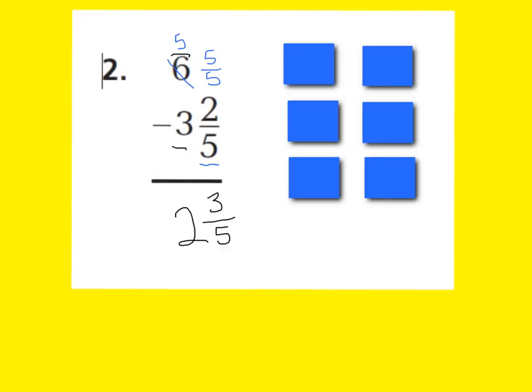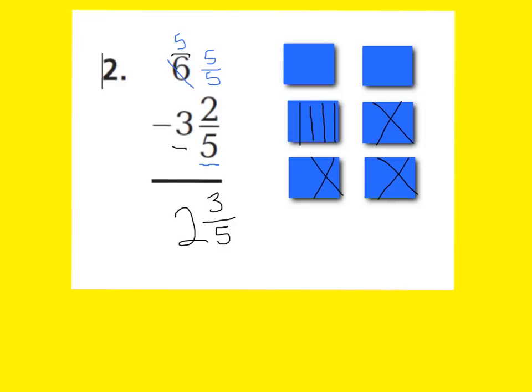Here's why. If I had 6 wholes and I wanted to take away 3 and 2 fifths, I could take away my 3 wholes easily. But then it would be hard to take away 2 fifths from the rest of my wholes. So what I would have to do is break up 1 whole into fifths. Now I have 5 fifths that I created, and I can take away 2 fifths from that 5 fifths — giving me 2 wholes and 3 fifths, which is the answer.